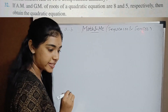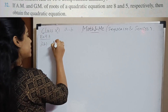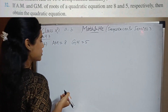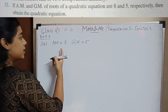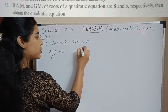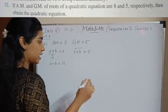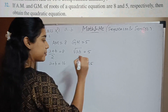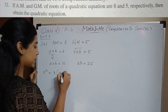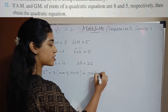Question 32, last question of the exercise: If the AM and GM of the roots of a quadratic equation are 8 and 5 respectively, obtain the quadratic equation. We have (a+b)/2 equals 8 and root(ab) equals 5, so a plus b equals 16 and ab equals 25.